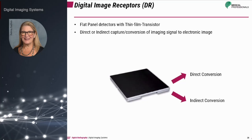The difference between direct and indirect capture is whether or not a scintillator material is needed. Direct capture flat panel detectors use a photoconductor, which converts exit radiation into an electronic signal. Indirect capture flat panel detectors need a scintillator material to capture the remnant beam and convert X-ray photons into light photons — a two-step process: first converting X-ray photons into light photons, then converting those light photons to an electronic signal.